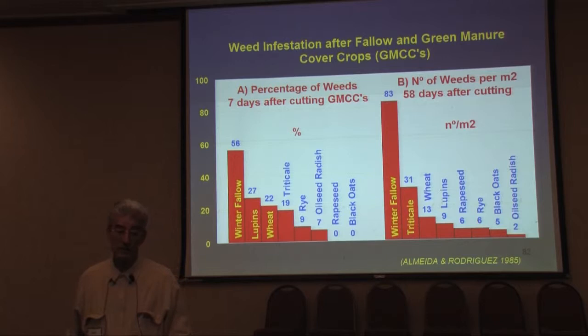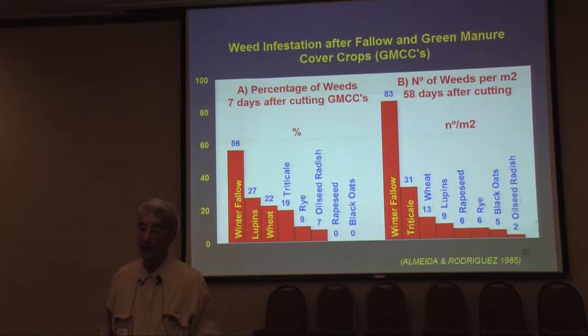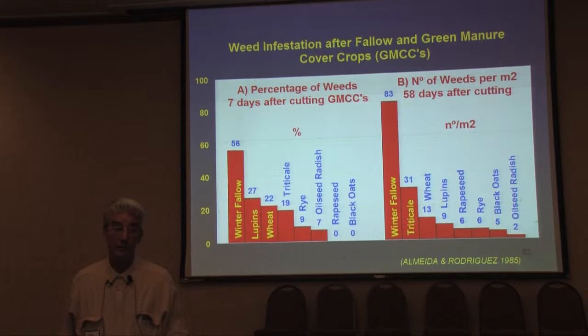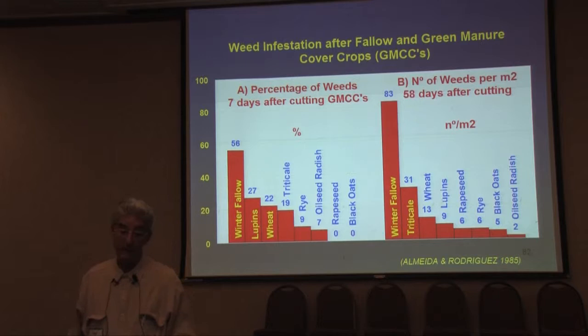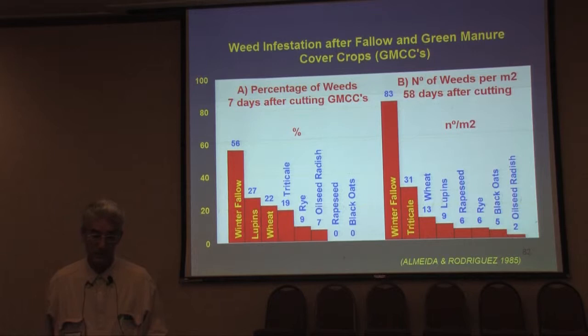This slide shows wheat infestation after fallow and green manure cover crops in an experiment we did in Brazil years ago. On the left, you see the percentage of weeds seven days after cutting cover crops — winter fallow had the highest incidence, while all cover crops substantially reduced different weeds, and we had no weeds at all after rapeseed and black oats. On the right, we see the number of weeds per square meter 58 days after cutting cover crops — winter fallow showed a high number while all cover crops again substantially reduced weeds.